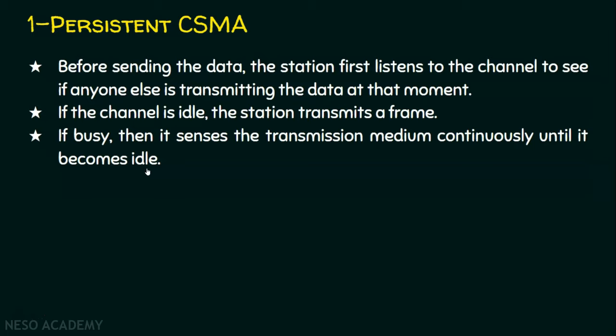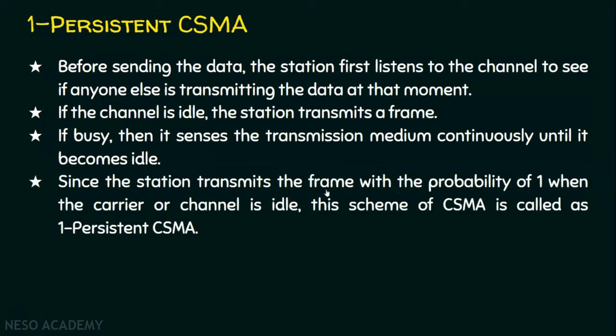Since the station transmits the frame with the probability of one when the carrier is idle, this scheme is called one-persistent CSMA. It is continuously checking the transmission medium, and when it finds the medium is idle, that station immediately transmits the frame. Since it transmits at the probability of one, it is called one-persistent CSMA.